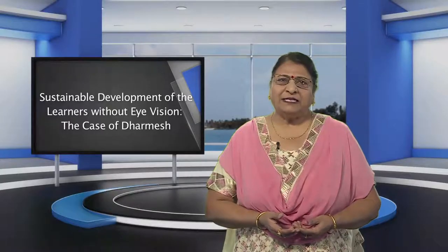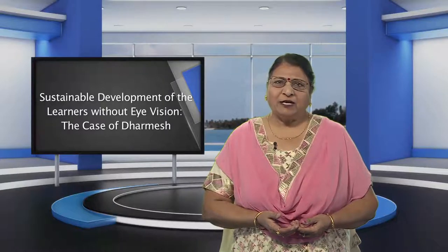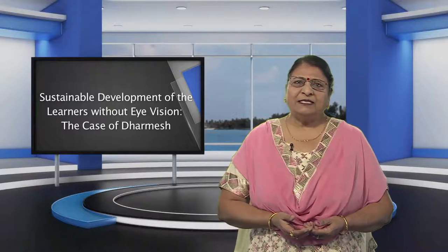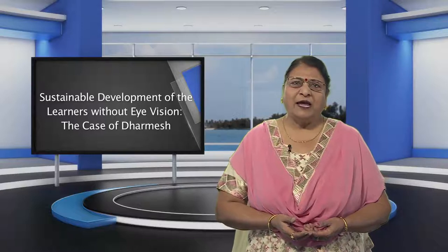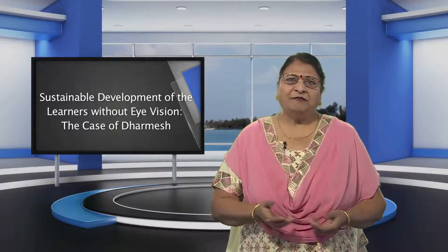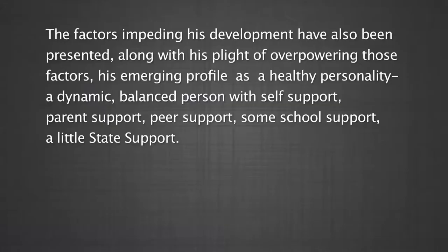This module presents the case of Dharmesh, a dedicated educationist without eye vision. It presents how he has successfully completed MA in English Literature and MET despite visual challenge, how he could sustain his studies with social and technological support. The factors impeding his development have also been presented, along with his plight of overpowering those factors. His emerging profile as a healthy personality — a dynamic, balanced person with self-support, parent support, peer support, some school support, and a little state support.